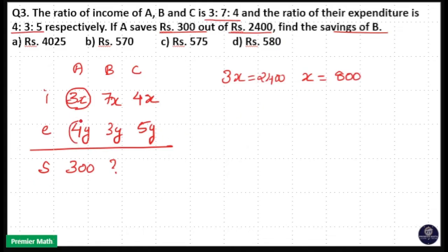Here expenditure of A is equal to 4y that is equal to income of A minus savings of A.